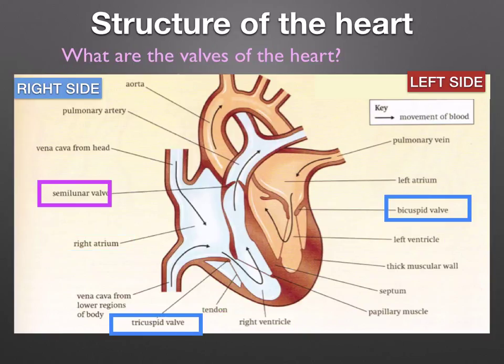The heart has different valves that prevent the backflow of blood. Between the aorta and ventricles, and the pulmonary artery and ventricles, are the semi-lunar valves. Between the atria and the ventricles you have the bicuspid and tricuspid valves, also called the atrioventricular valves. The bicuspid valve is sometimes called the mitral valve.